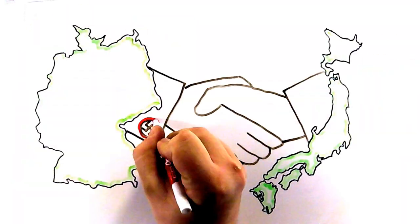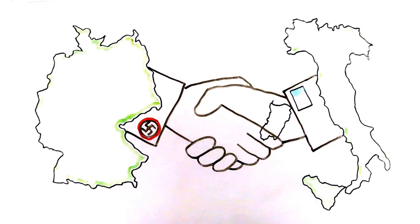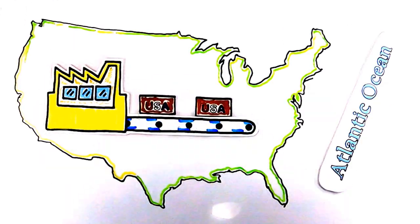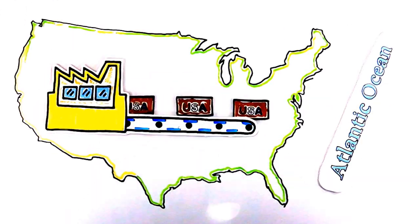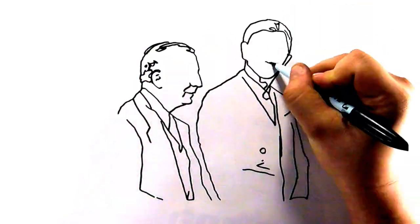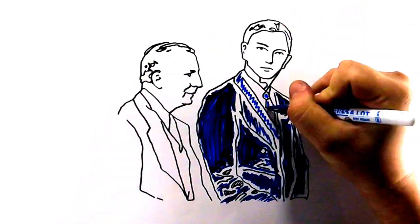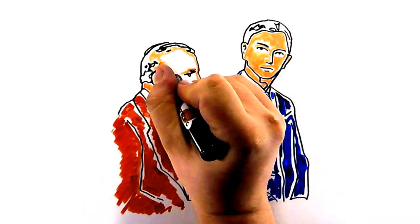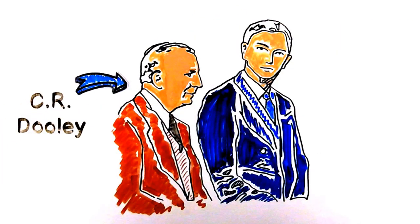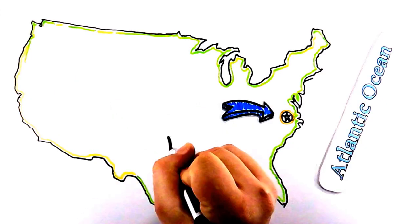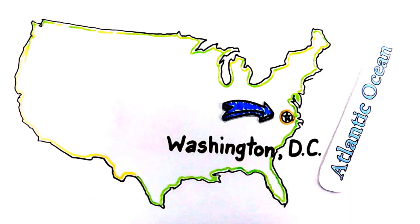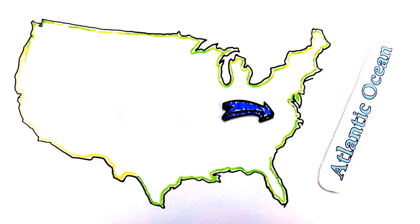Germany would later form an alliance with both Japan and Italy. The US needed to be able to quickly expand and keep up with the demand. The US government wanted to develop a program much like the one Charles R. Allen had during World War I. C.R. Dooley from the Ciccone Vacuum Company and Walter Dietz from the Western Electric Company were sent to Washington DC on loan to begin development of the program, since both of them had experience in training and development by helping with the shipbuilding project during World War I.